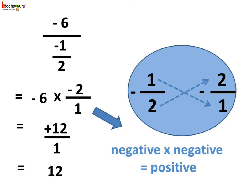Now, what if both the dividend and the divisor are negative numbers? Like here, minus 6 divided by minus 1 by 2. Well, it is the same as minus 6 multiplied by minus 2 by 1. As a negative number multiplied by a negative number is a positive number, minus 6 multiplied by minus 2 is equal to 12. And we get the answer as 12 by 1, which is actually 12.